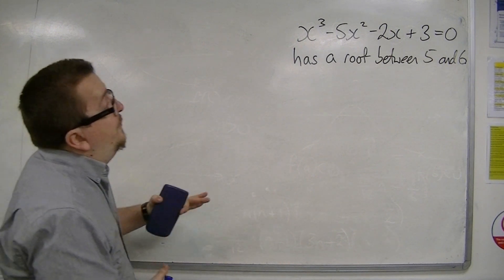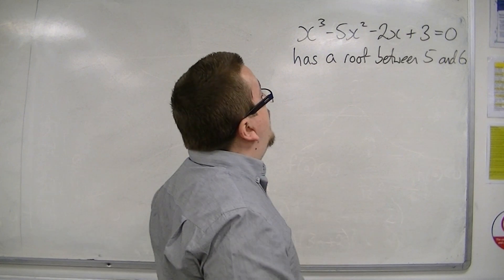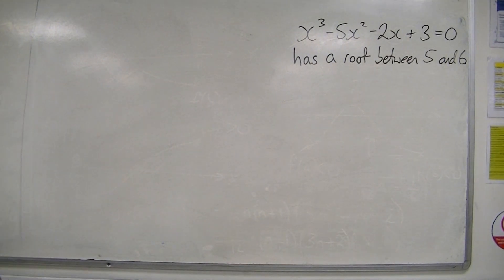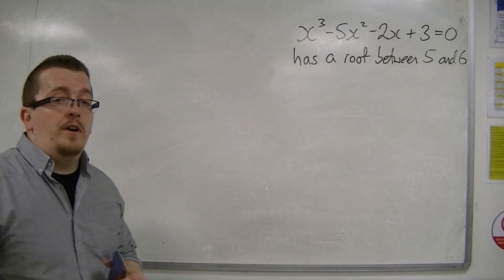So let's say we wanted to confirm that x³ - 5x² - 2x + 3 = 0 has a root between 5 and 6.